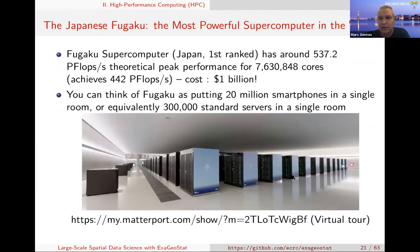What we're talking about now is exascale or exaflop, 10 to the power 18 operations per second - 1 billion billion operations per second. Such a computer doesn't exist yet. The first one is expected to come sometime next year, probably in the US. The most powerful supercomputer in the world is currently the Fugaku in Japan, ranked number one, with around 537 petaflops peak performance for 7.6 million cores, costing about $1 billion. You can think about it as putting 20 million smartphones in a room, or 300,000 servers.